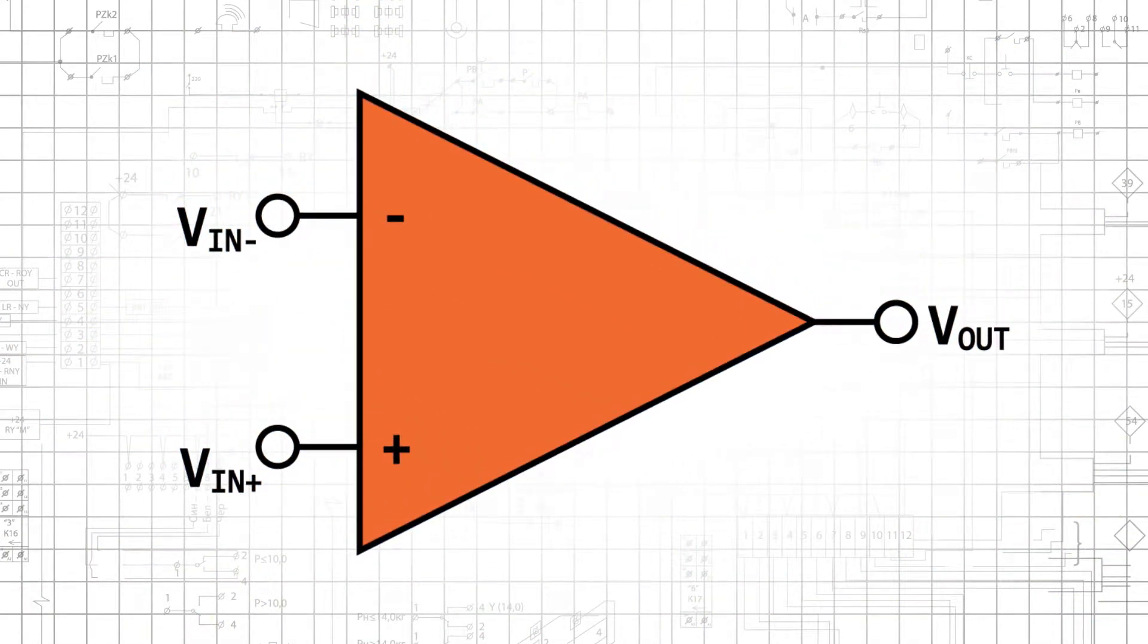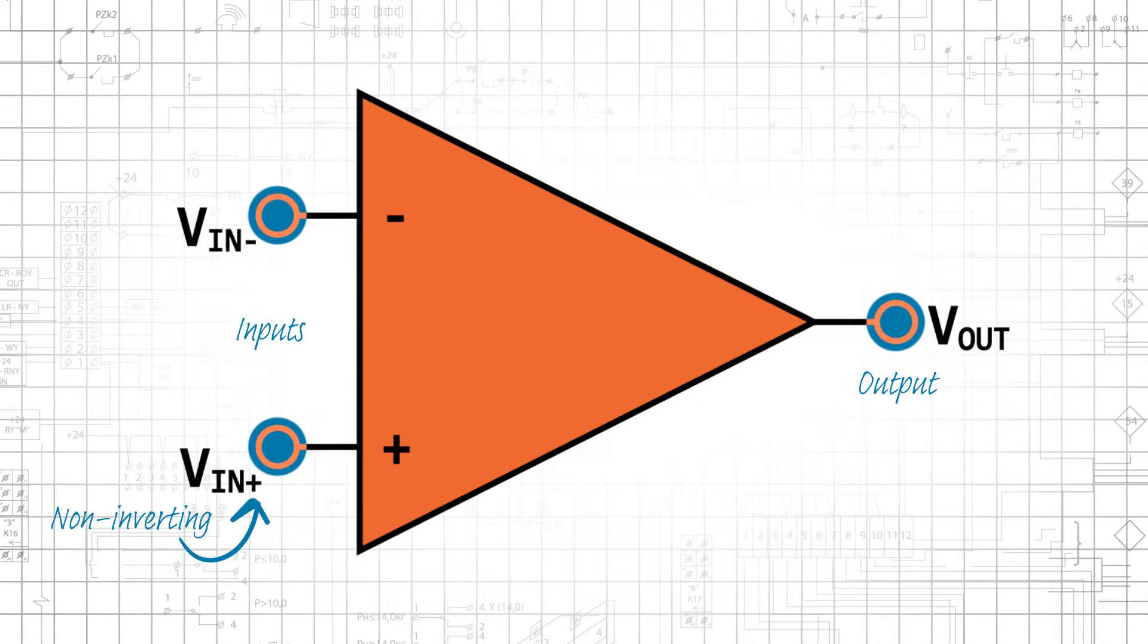The simplified, idealized op-amp is a three-terminal device. The two terminals on the left are inputs, and the terminal on the right is the output. Note that the input terminals have different labels. The plus sign indicates the non-inverting input terminal, and the minus sign indicates the inverting input terminal.